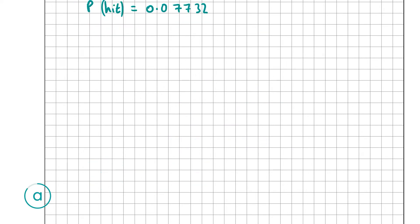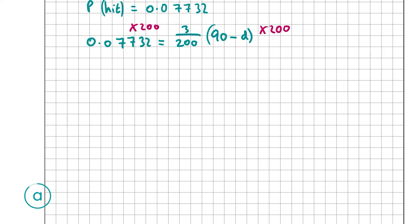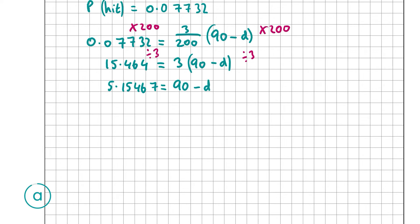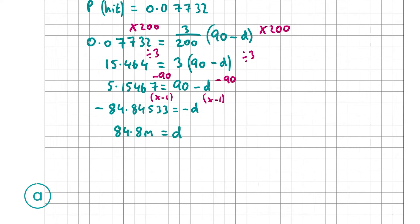Multiplying both sides by 200: 15.464 = 3(90 − d). Dividing by 3: 5.15467 = 90 − d. Subtracting 90: −84.84533 = −d, so d = 84.84533, which correct to one decimal place is d = 84.8 meters. That is the value of x — the distance at which Jack has an 80% chance of at least one hit.